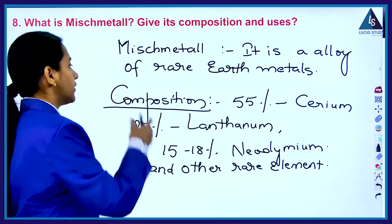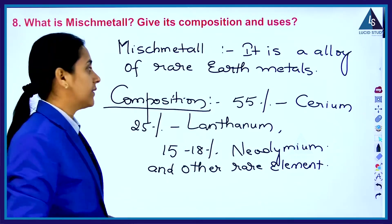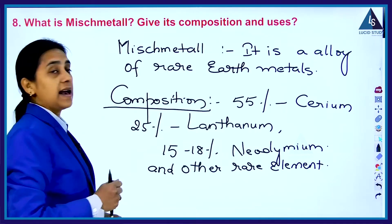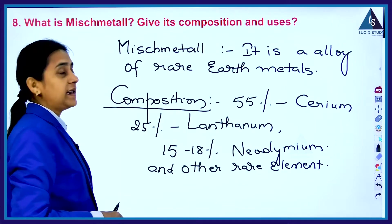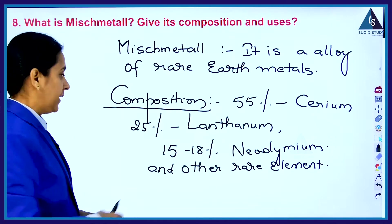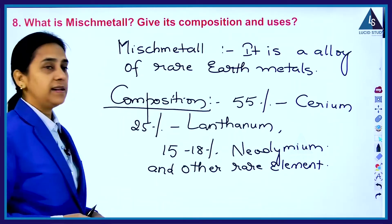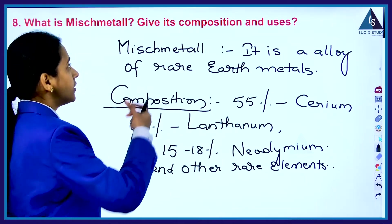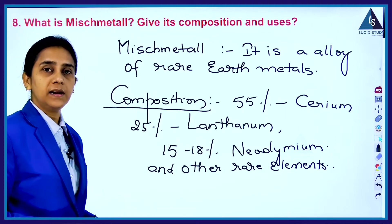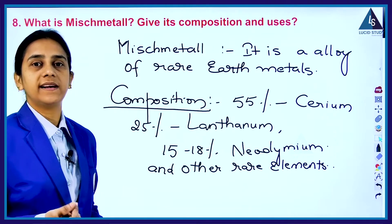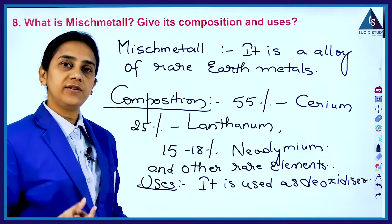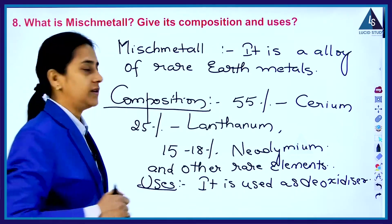Once again children, the composition of misch metal: it is 55 percent cerium, 25 percent lanthanum, and 15 to 18 percent neodymium and other rare elements. The use of this metal, that is misch metal, it is used as a deoxidizer. Deoxidizer means removing the oxygen, and it is used in vacuum tubes to remove the oxygen.